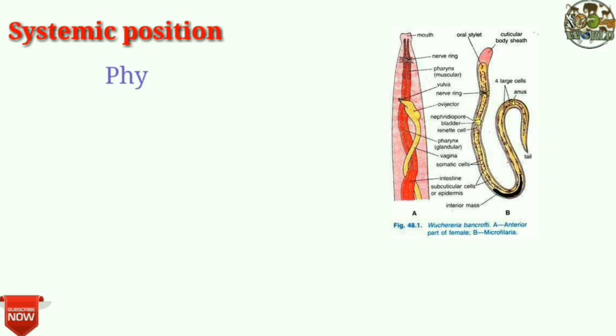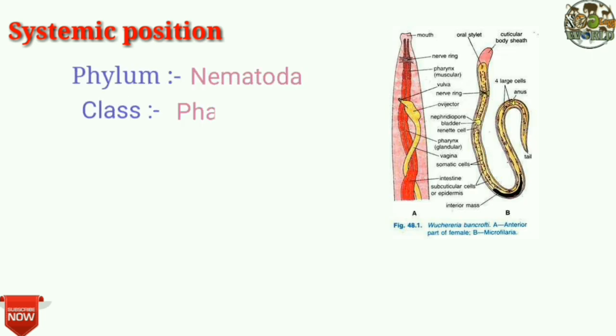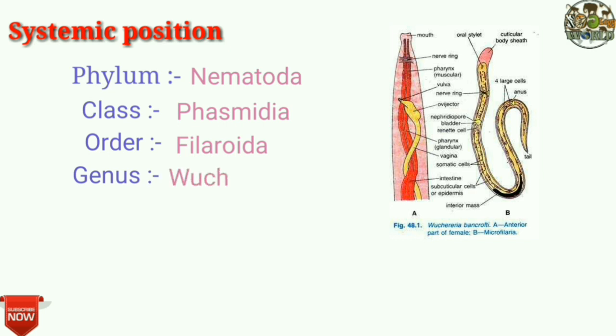Systematic position: Phylum Nematoda, Class Phasmida, Order Filarida, Genus Wuchereria, Species bancrofti.